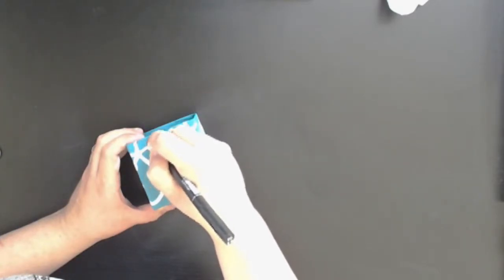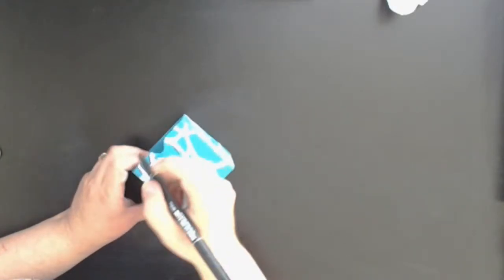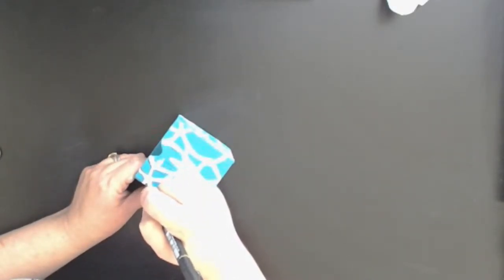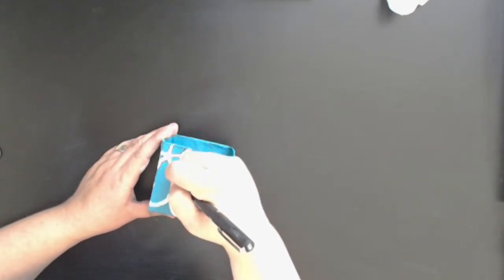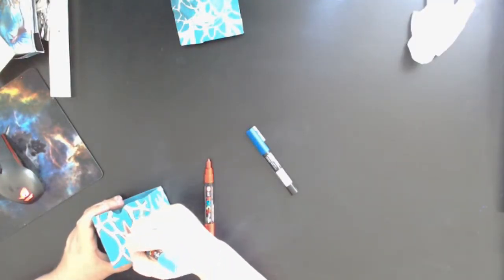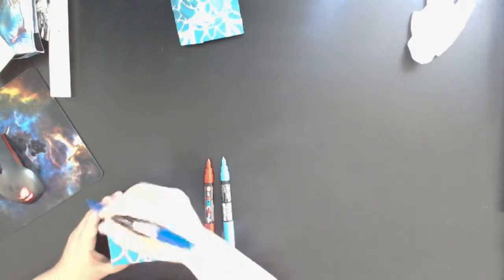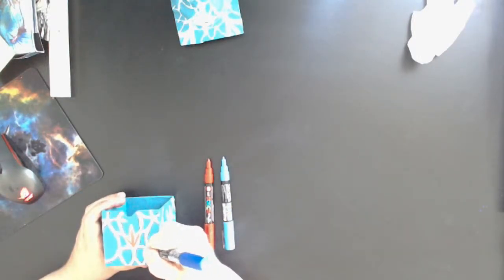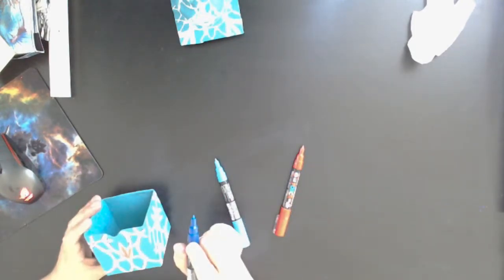Once the ink had dried completely I just came back in with that same waterproof black pen. And I outlined the stencil design. I still wanted just a little bit more to the design itself. So I came back in with Posca paint pens and markers. And added just a little bit more to the overall design of the box. I limited the color palette though to just three marker colors.